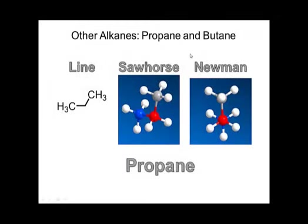Now we're going to talk about propane and butane in addition to ethane. Propane is just a three-carbon chain. If we look down these two carbons, we can draw a Newman projection for propane. The red carbon is in the front and the blue carbon — the CH₃ — is in the back.